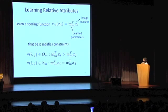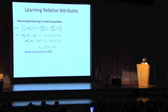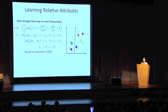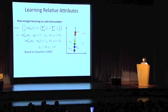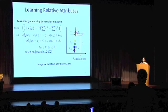We learn this function via max margin formulation based on the work of Joachims et al. Pictorially, in the feature space with images along their desired rankings, the weight vector we learn preserves the desired ranking when images are projected onto it. The margin is defined between the two closest images in terms of their ranks. Given a novel image and its features, we can then predict the value of the relative attributes for that image.